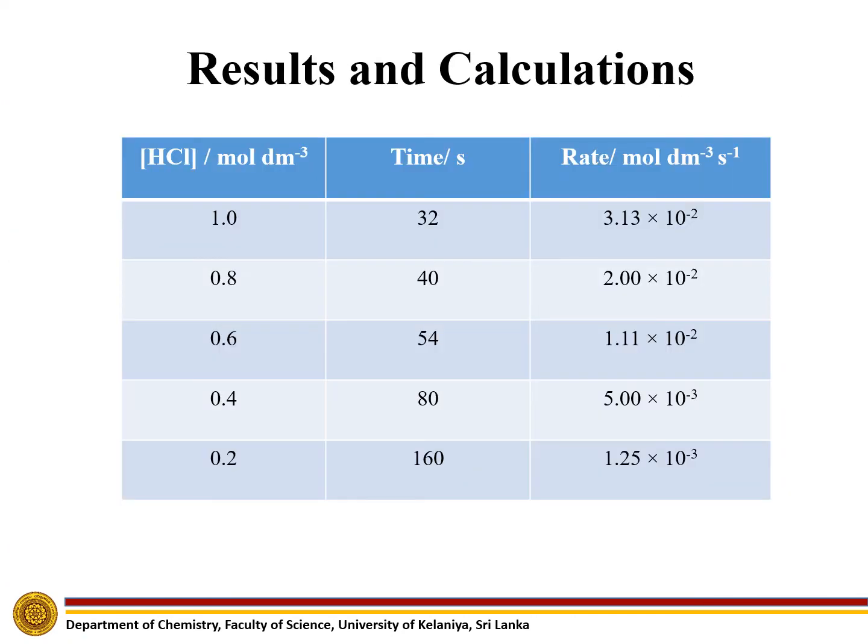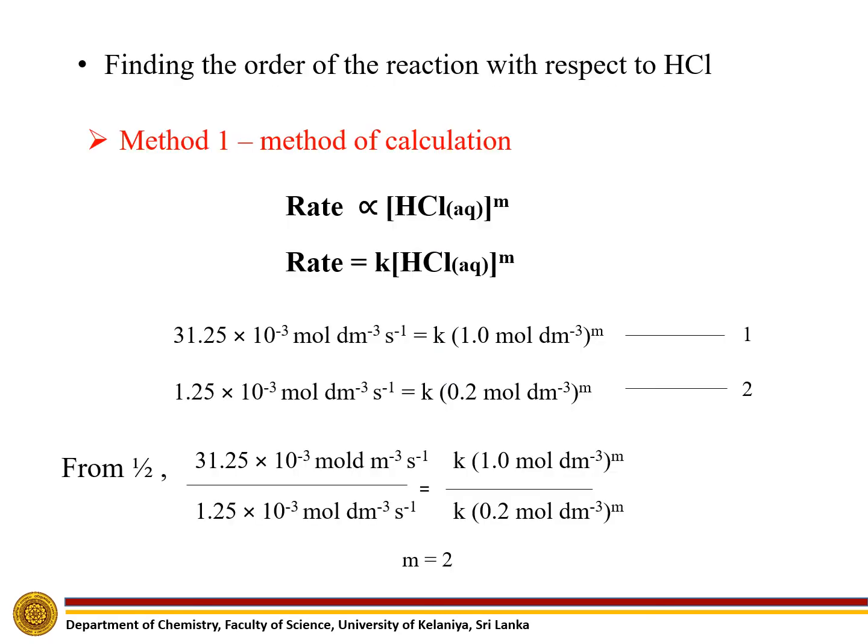The results of this experiment are given in this table. Two methods can be used to determine the order with respect to HCl. The first method is the calculation method. You can calculate the order with respect to HCl as shown here. The answer indicates that the order of the reaction with respect to HCl is 2.